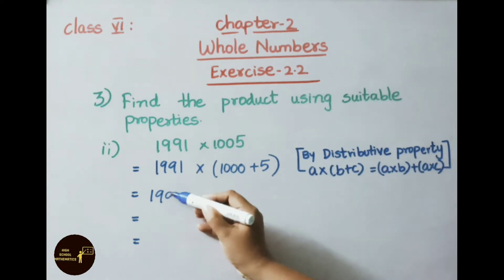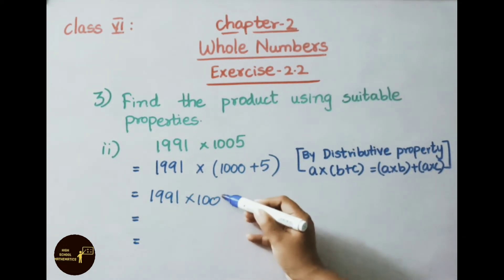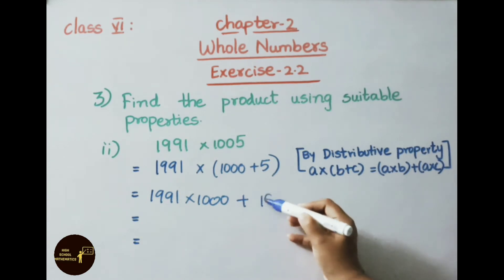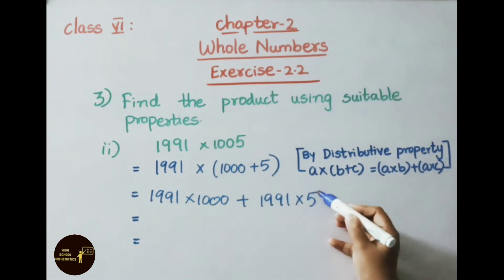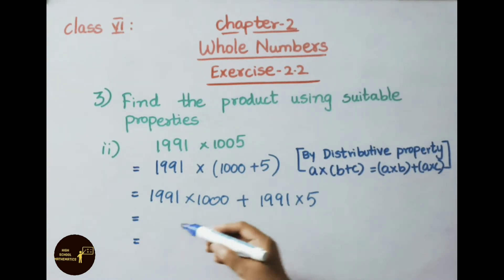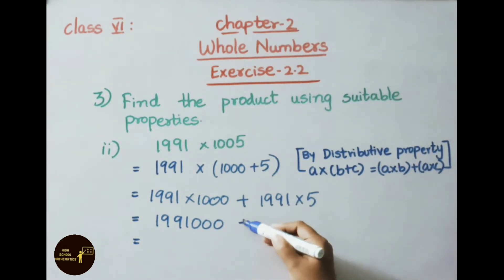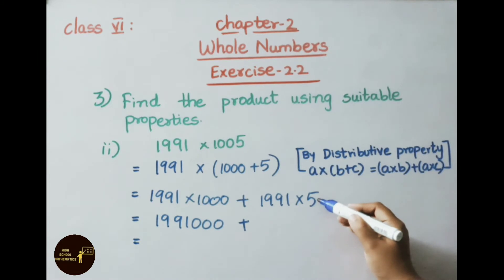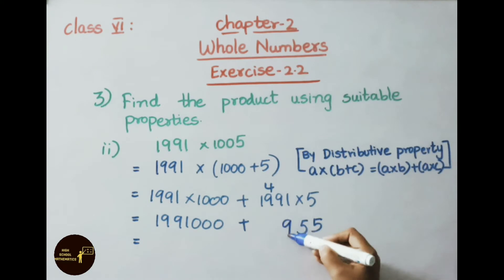1991 into 1000, we get answer 1,991,000 plus 1991 into 5. We shall multiply now. 5 ones are 5. 5 nines are 45, 5 carry 4. 5 nines are 45 plus 4 is 49, so 9 carry 4. 5 ones are 5 plus 4 is 9. So 9,955.